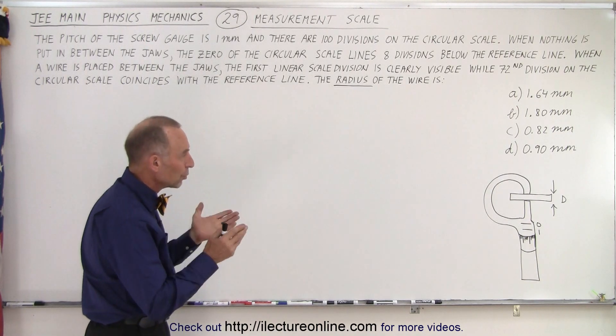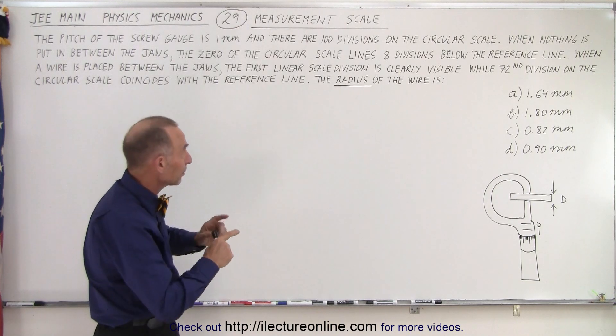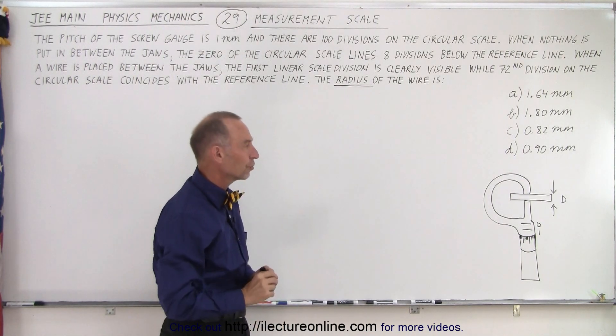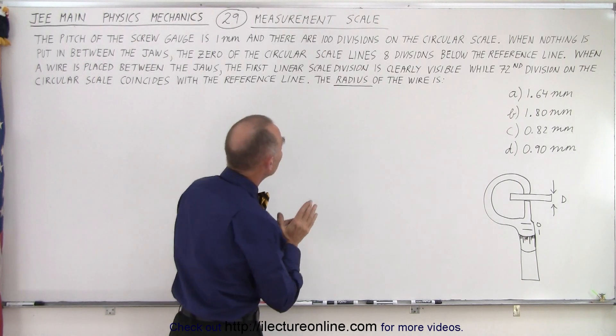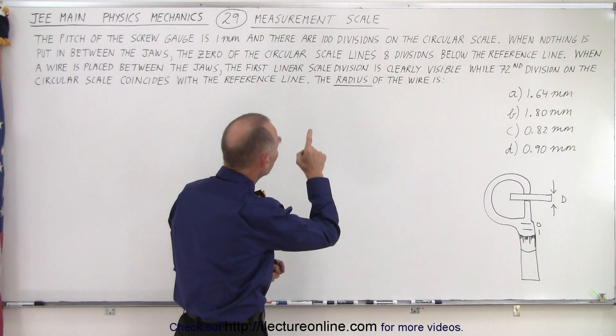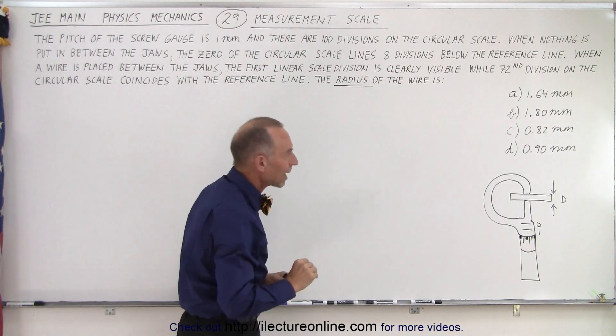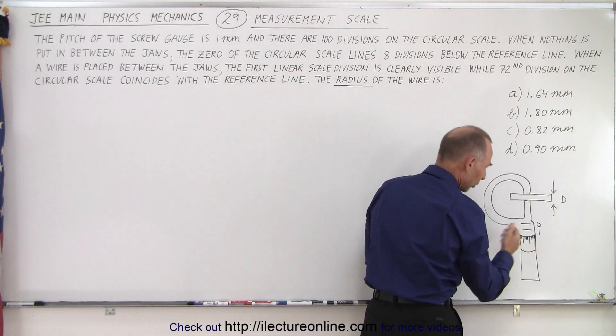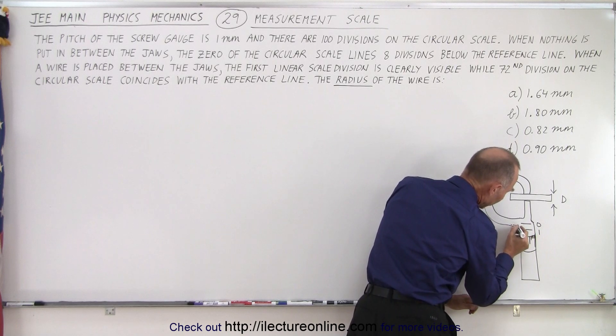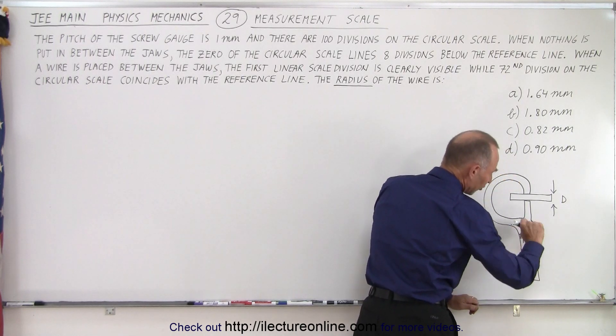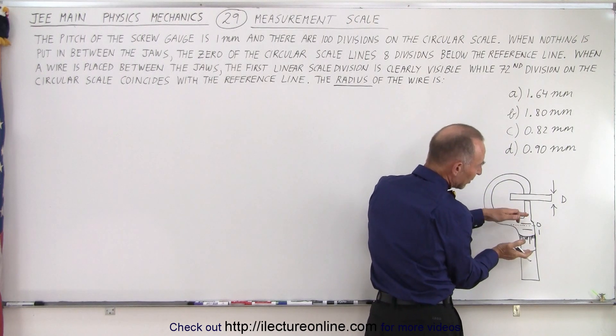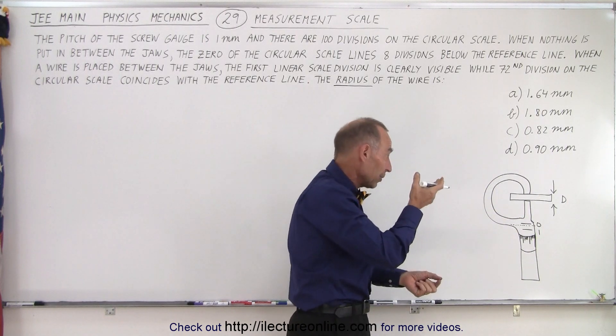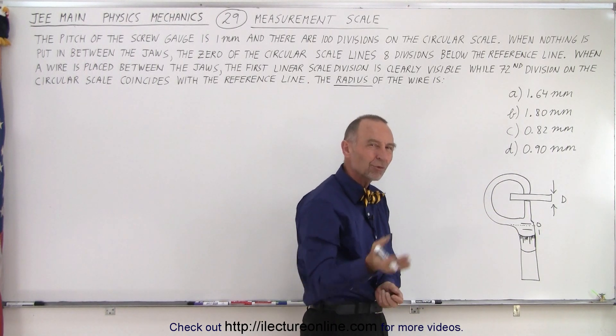What we're doing here is measuring the diameter of the wire, but notice they're asking us about the radius, so be very careful that you don't get that confused. Also, the zero reading is off. When we have nothing between the jaws, it shows eight divisions below the reference line on the circular scale, which means that when we close it all up, it doesn't quite get to zero. It gets eight circular divisions away from zero. So that means when we read the diameter, we're actually exaggerating the size of the diameter by eight of those circular divisions. So we need to subtract those eight divisions.